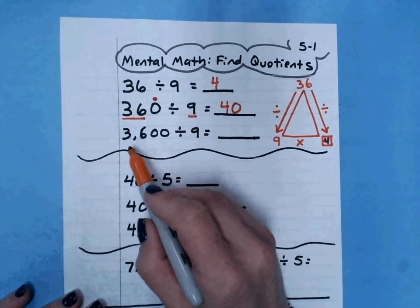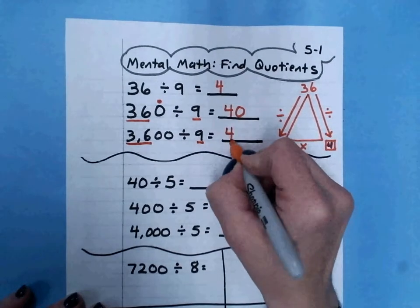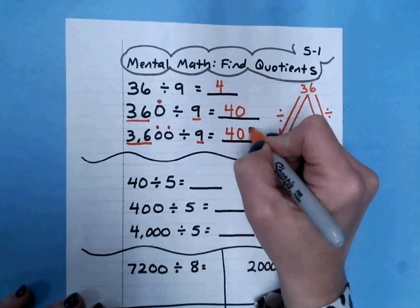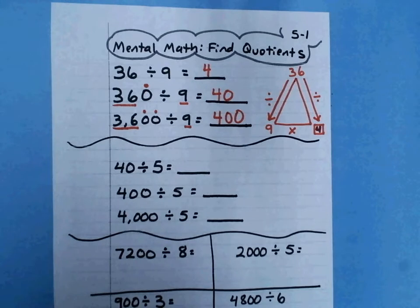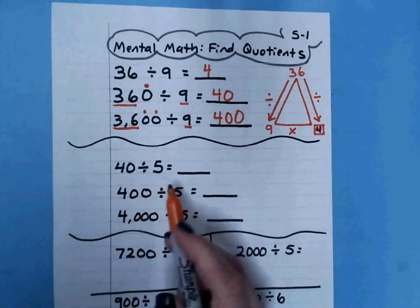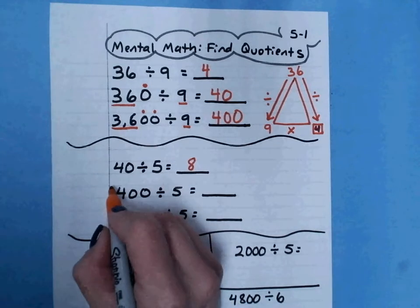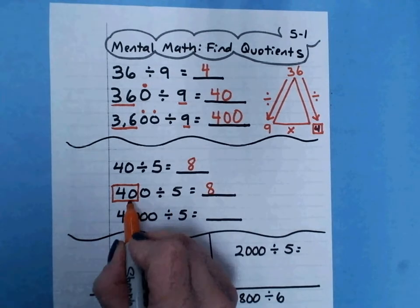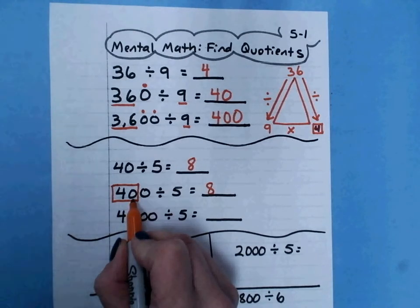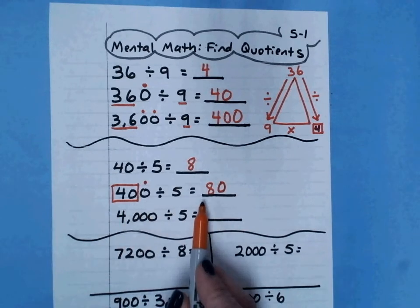360 divided by 9 equals 40. Then here I've got 3,600 divided by 9. Again, the basic fact is 36 divided by 9, which is 4. But this time I need to add one, two 0s. The next example I have is special because this time the basic fact ends in a 0. You have to be careful when you're doing mental math when the basic fact ends in a 0. 40 divided by 5 is 8. I can use that basic division fact to help me with 400 divided by 5. My basic fact is still 40 divided by 5, which is 8. But you want to be careful. This 0 is part of the basic fact. It does not go in the answer. The only 0 that goes in the answer is the one that's not part of the basic fact. So 400 divided by 5 equals 80.